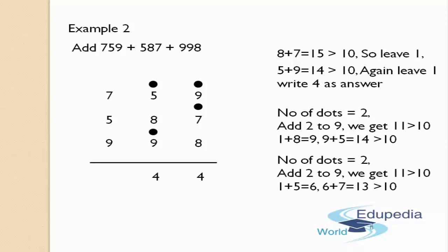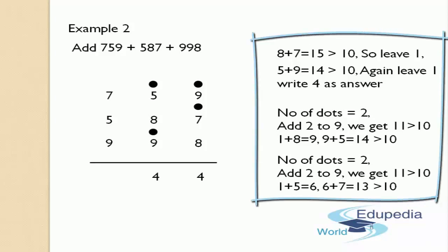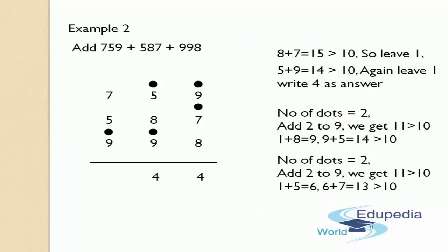This count should be added to the next column, that is the hundreds place digit, which is 9. Add this 2 to 9 — you will get 11. You got a 2-digit number and it is greater than 10. So you have to leave 1, and instead of leaving that 1, you have to place a dot on the top of the number, like this. After keeping the dot, the remaining number is 1, which should be added to the next digit — 1 plus 5. You are going to get 6.